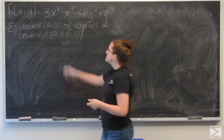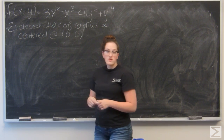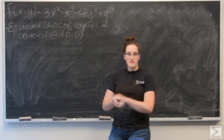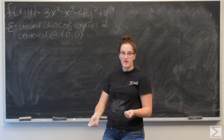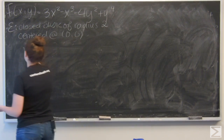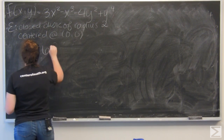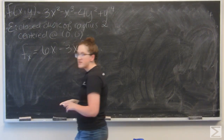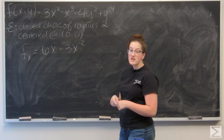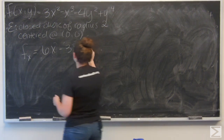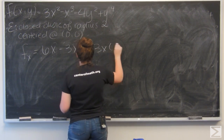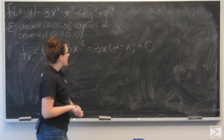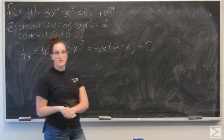The first thing I want to do is check the gradient of f for when it equals 0. So I need to find its two partial derivatives, f sub x and f sub y, and set them equal to 0. Starting with f sub x, it's going to be 6x minus 3x squared. I'll factor out a 3x, set it equal to 0, and I get x equals 0 and x equals positive 2.